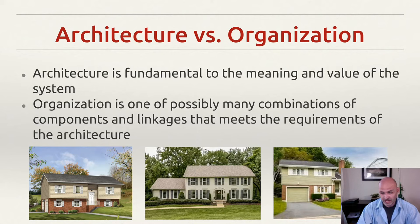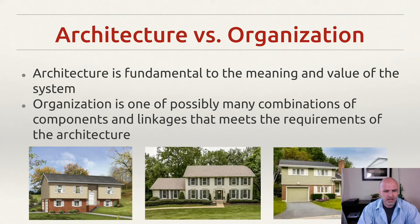A raised ranch is a house that you generally walk into with usually a half staircase up and a half staircase down. The basement is only partly submerged below the ground — it's effectively a ranch-style house with a basement that's not fully submerged. A colonial is always a two-story home. It may have a basement or not. There's usually four main rooms per floor, not counting the bathrooms.